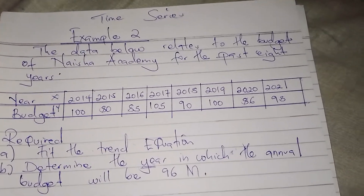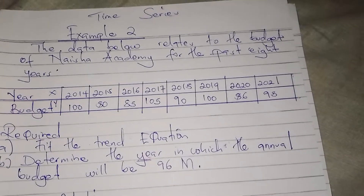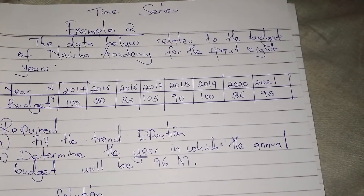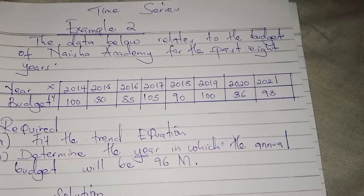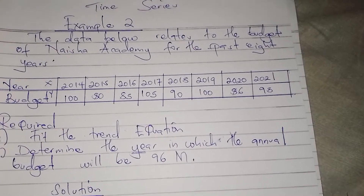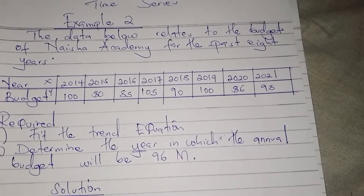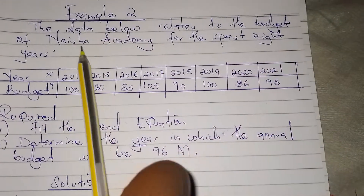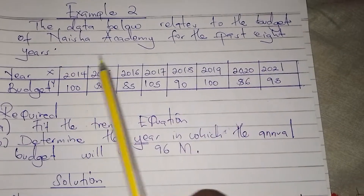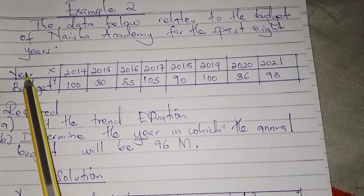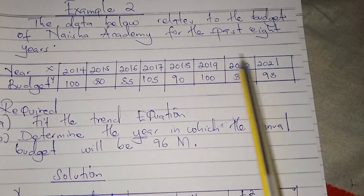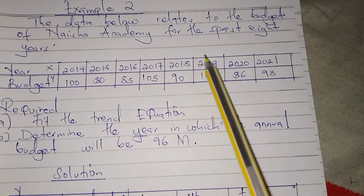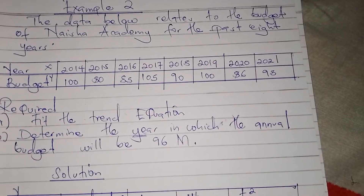Let's look at the second example in time series. In this example, we are going to look at a question whereby the number of years is even. In the previous video we had odd years, so here we look at a question where the number of years is even. Example two: the data below relates to the budget of Nation Academy for the past eight years — eight years is already even. They have given us years from 2014 to 2021 and the budget for all years; when we count it's 1, 2, 3, 4, 5, 6, 7, 8 — that is an even number.